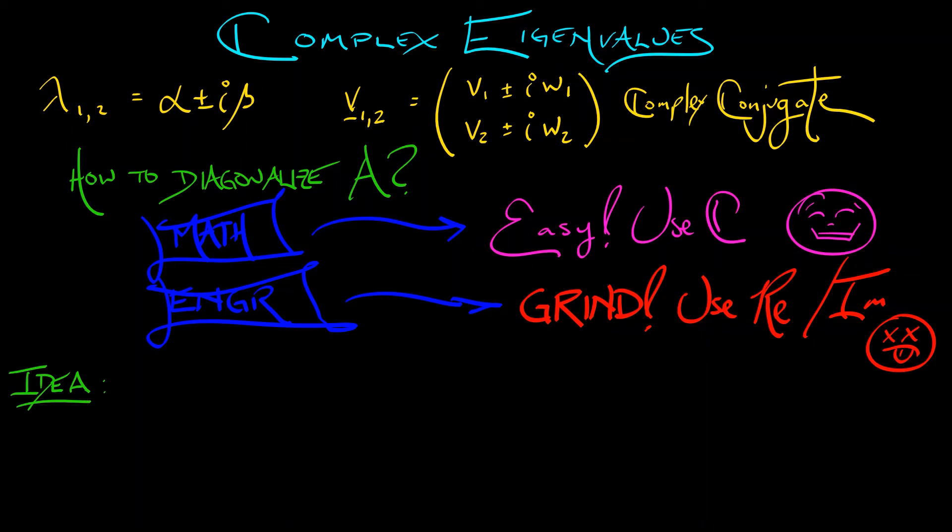Here's the idea. Let the matrix capital V, our change of basis matrix, have entries little v1, little v2, w1, w2. That is the real and imaginary components of my complex eigenvectors. This is going to form our change of coordinates.